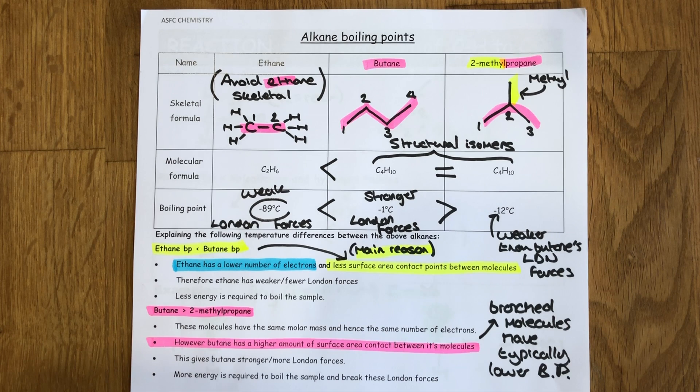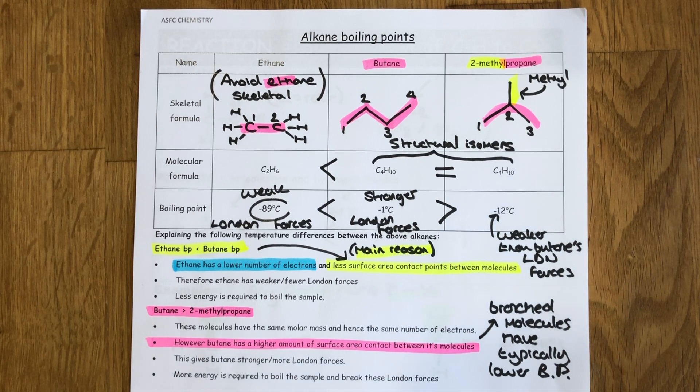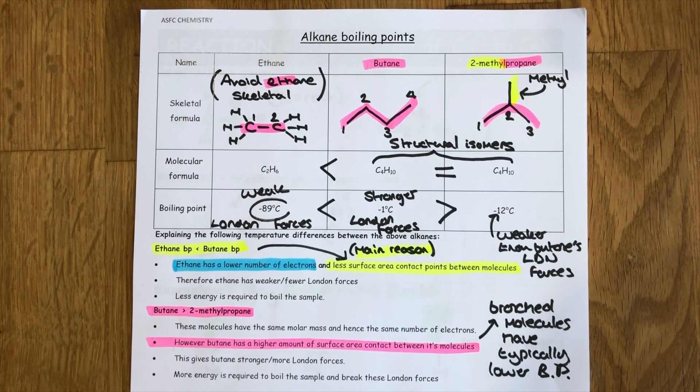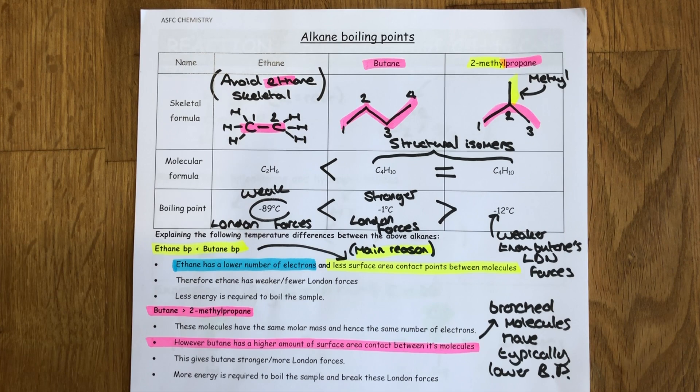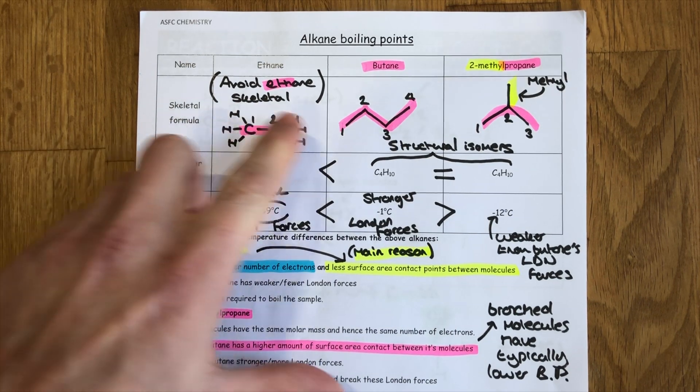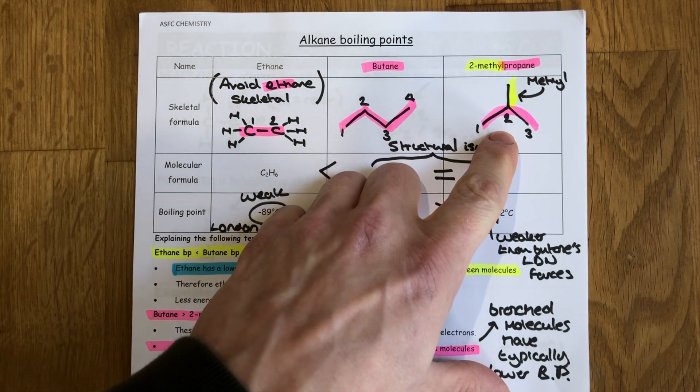Hi guys and welcome back. In this video I'm going to give you a full walkthrough of the alkane notes. You can access these via canvas. When we're looking at different alkanes, our first thing to talk about is their variance in boiling points. So I've got three different alkanes here for you: ethane, butane, and two methylpropane.